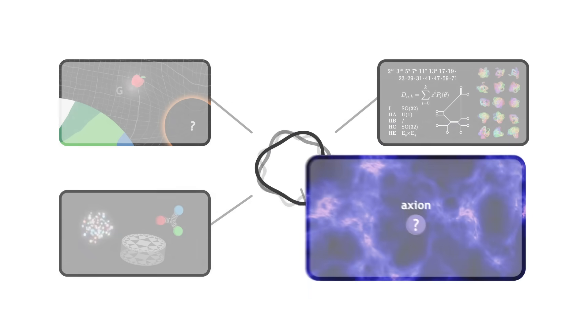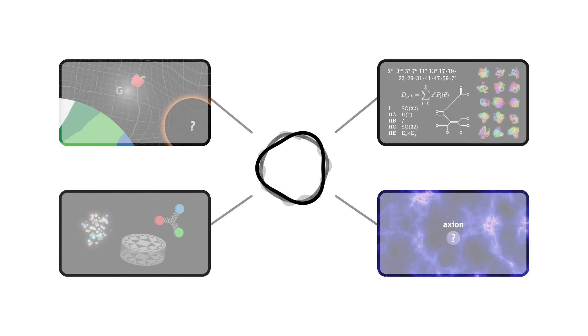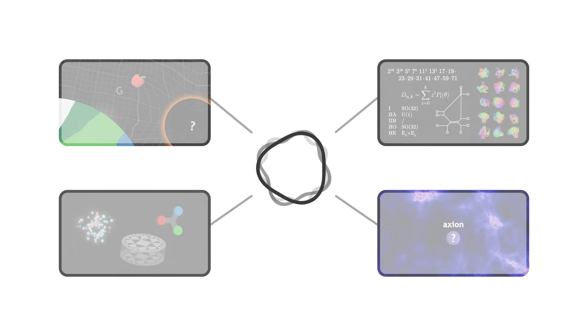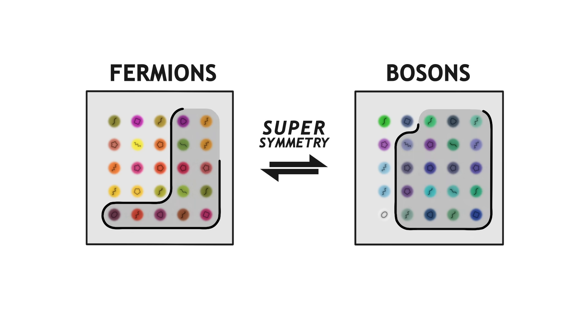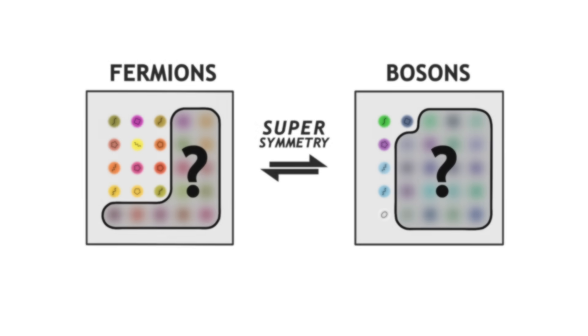That said, there is still a lot of research to do. In particular, the aspects of string theory that are best understood rely heavily on supersymmetry, which tends to predict the existence of additional particles which we don't seem to observe yet. There are some compactifications that would explain that we don't observe supersymmetry, however these are still very rare and not well understood.